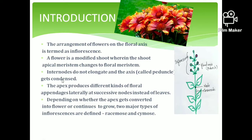When the shoot undergoes modification into a flower, certain structures change. The first one is the internodes — the internodes are the gap between one node and the other node. The next ones are the leaves, and the next one is the floral appendages.